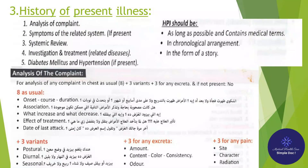3. History of Present Illness (HPI) includes: (1) analysis of the complaint, (2) symptoms of the related system if present, (3) systemic review, (4) investigation and treatment, and (5) diabetes mellitus and hypertension if present. HPI should be as long as possible, contain medical terms, be in chronological arrangement, and presented in the form of a story.